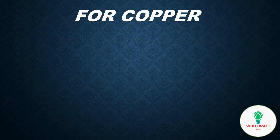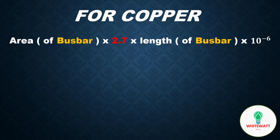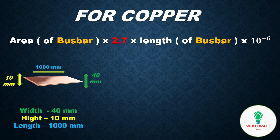Now the way to calculate for copper — the thumb rule for copper is: area of the bus bar multiplied by 2.7. For example, we have a copper bus bar whose width is 40 mm, height is 10 mm, and length is 1000 mm — the same dimensions as the aluminium bus bar. Now put these values in the formula.